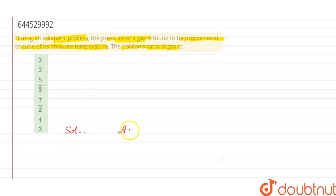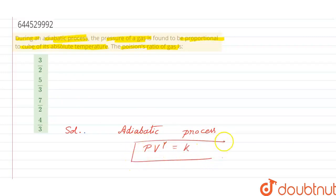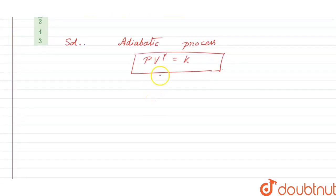For solving this question, it is told that the process occurring here is adiabatic in nature. So for an adiabatic process we can write that PVγ is equal to k, where γ represents the Poisson's ratio and k is the constant of proportionality.